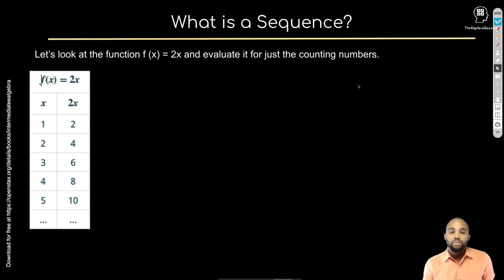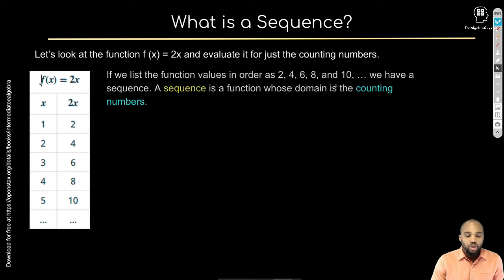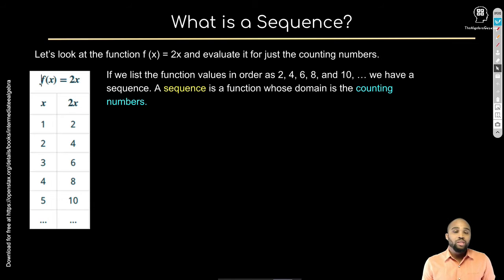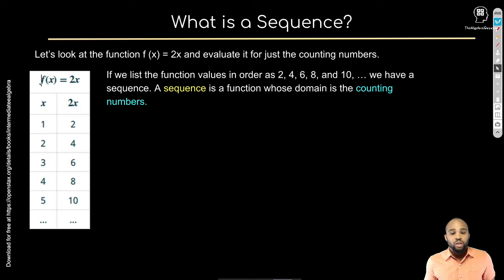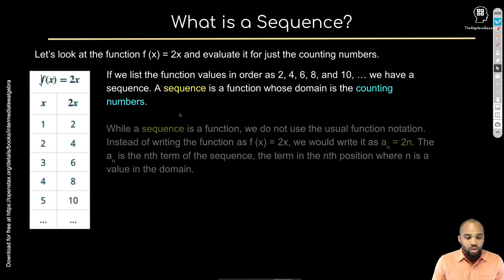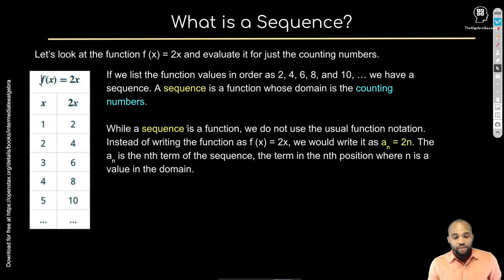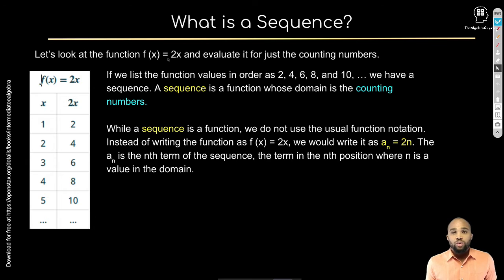What does that have to do with sequences? A sequence is a set of numbers generated using the domain of counting numbers — 1, 2, 3, 4, 5, and so on. You don't include negative numbers or decimals, just positive integers. While a sequence is a function, we don't write it as f(x) = 2x. You'll see different notation for sequences.